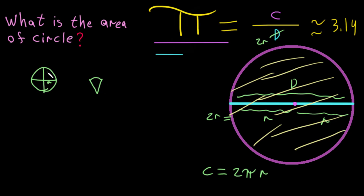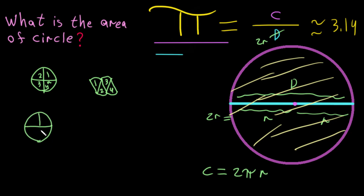I cut it into four portions — piece one, two, three, and four — and I draw them out like this. Then if I want to cut it more, I cut it into eight pieces, and I rearrange them like this.